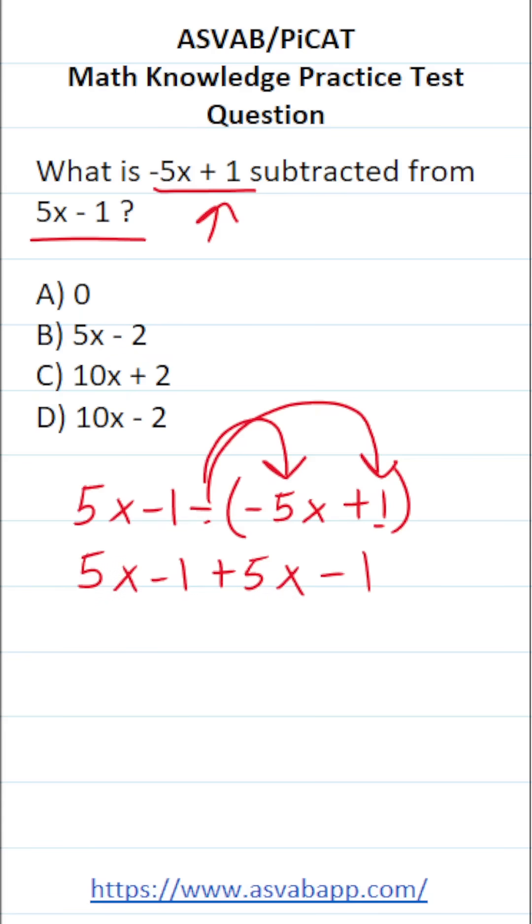All right. So now that we've distributed that negative sign, all we have to do is simplify this expression by combining like terms. Like terms have the same letter variables raised to the same power.